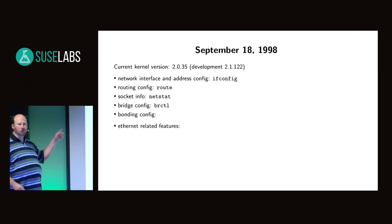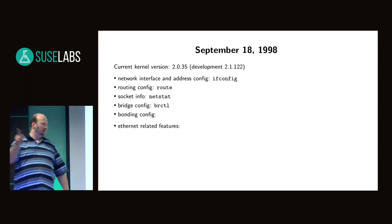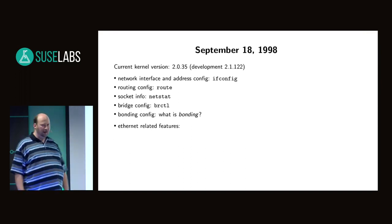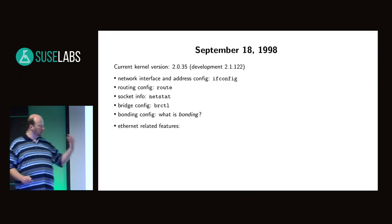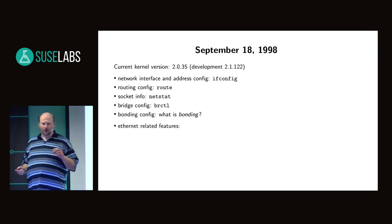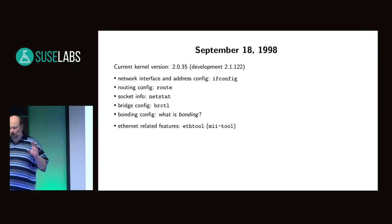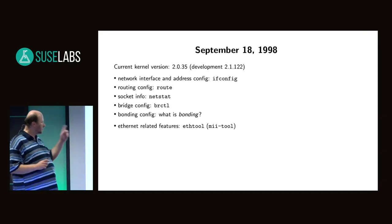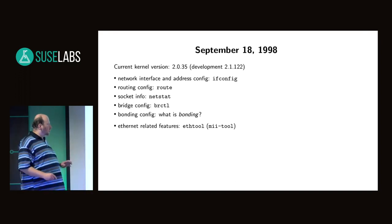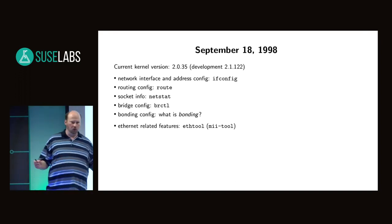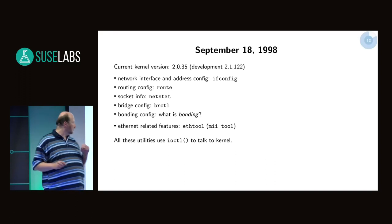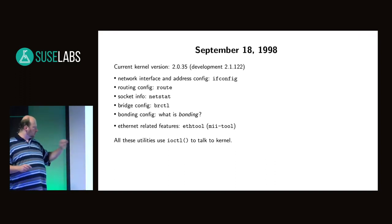What are we using to configure bonding? There's no bonding yet — that was a tricky question. Bonding wasn't introduced until the middle of the 2.3 series. What are we using to configure Ethernet-related features of network cards? ETH tool, or more likely MII tool back then. What do these utilities have in common? They are all using the IOCTL syscall to talk to the kernel.